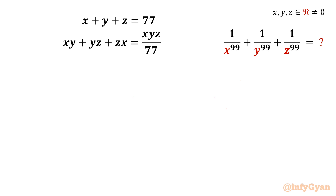Here we are going to simplify 1 over x raised to the power 99, plus 1 over y raised to the power 99, plus 1 over z raised to the power 99. The known equations are x plus y plus z equal to 77, and xy plus yz plus zx equal to xyz over 77. xyz are real numbers and cannot be equal to 0.